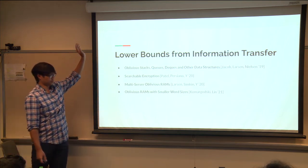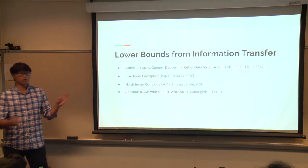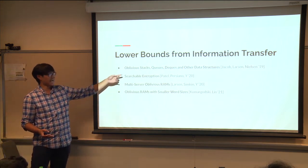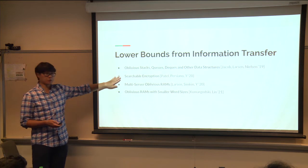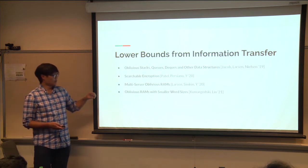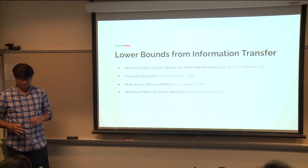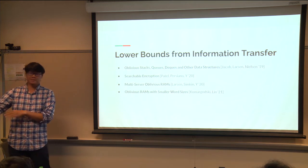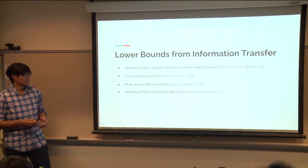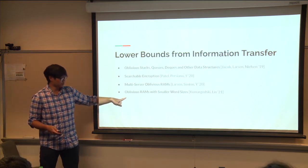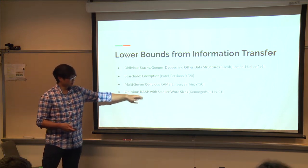After this work, several results used information transfer to prove lower bounds for a variety of oblivious data structures, including stacks, queues, deques, priority queues, search trees, searchable encryption, and multi-server oblivious RAMs — where instead of one compromised server, only a fraction of multiple servers are compromised. There are also results handling smaller word sizes down to the bit probe model.